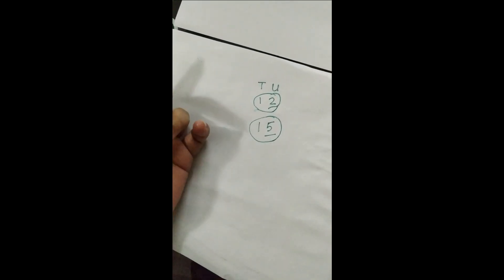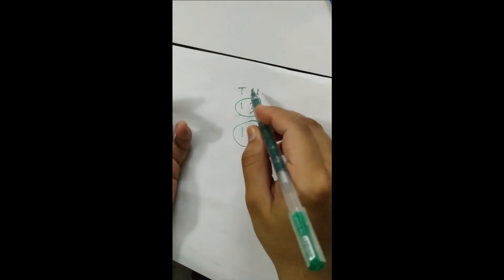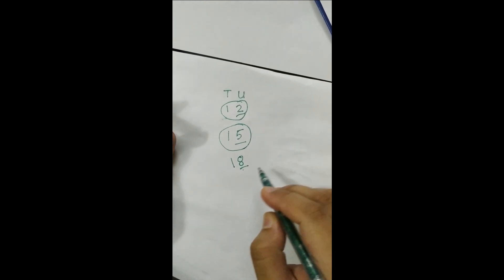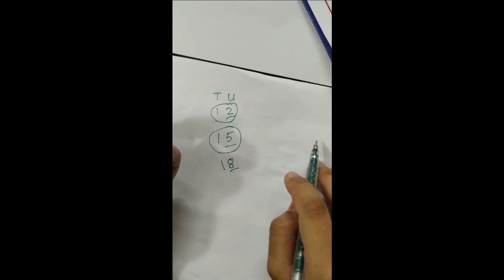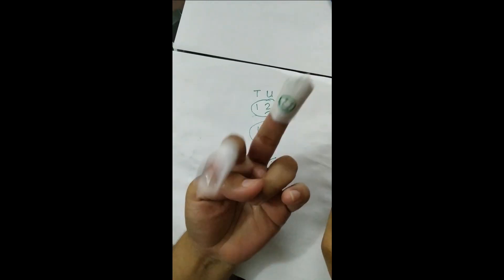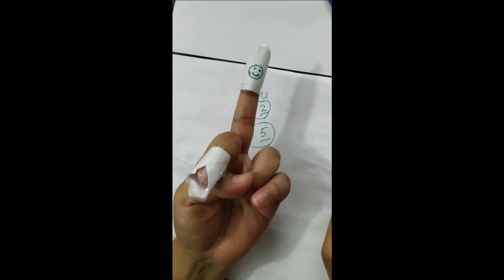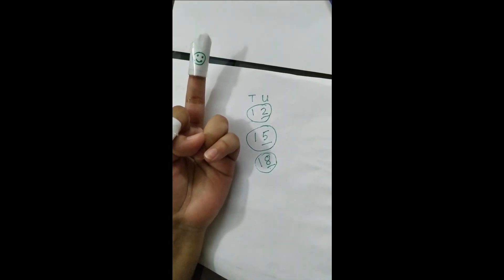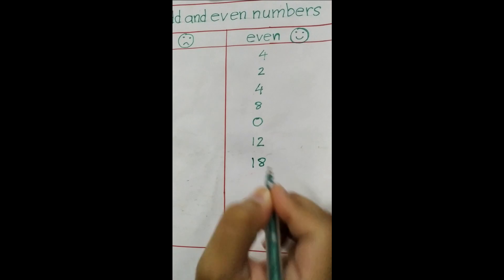Another, if I want to write eighteen. Units is eight, that means we will find out if this eight is odd or even. One, two, three, four, five, six, seven, eight. Eight is even, that means the whole thing will be even. We will write here even.